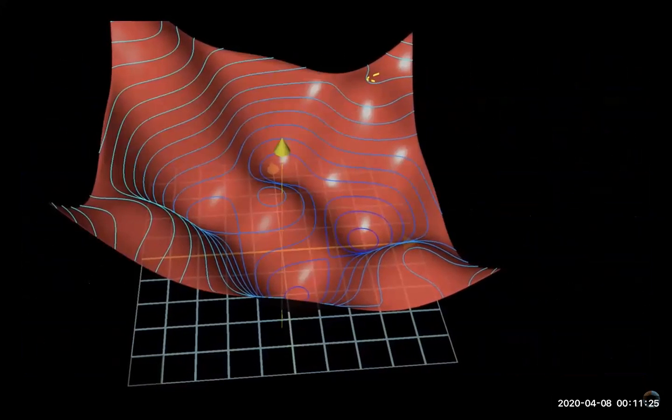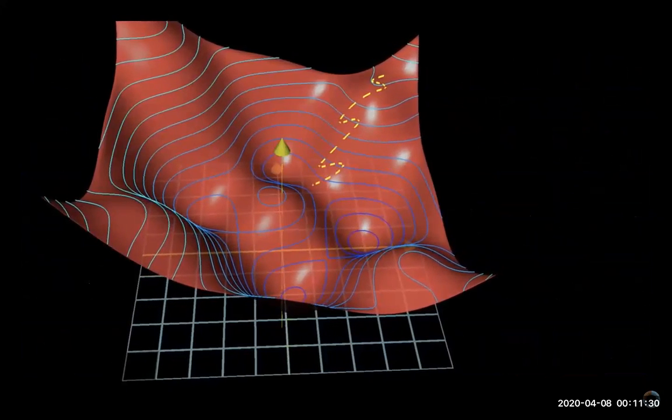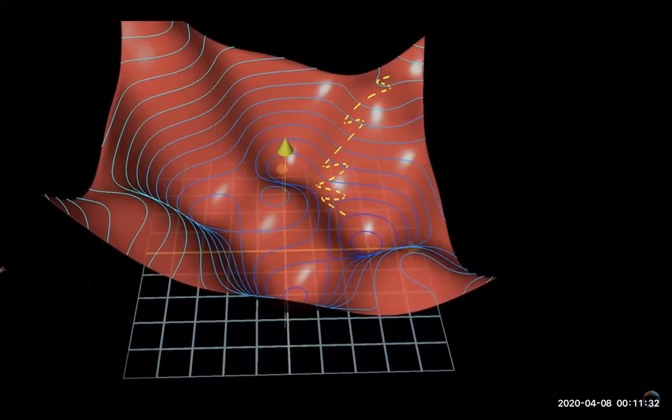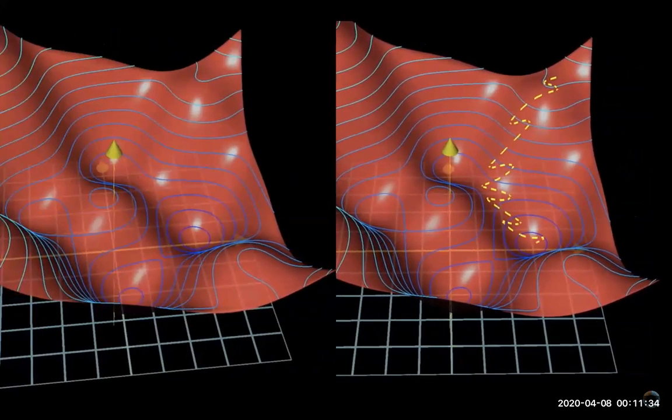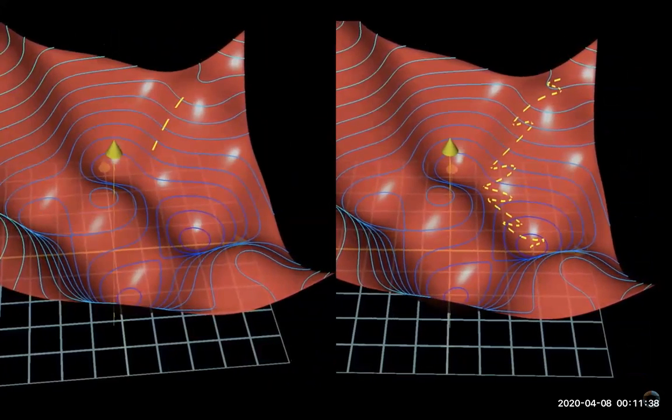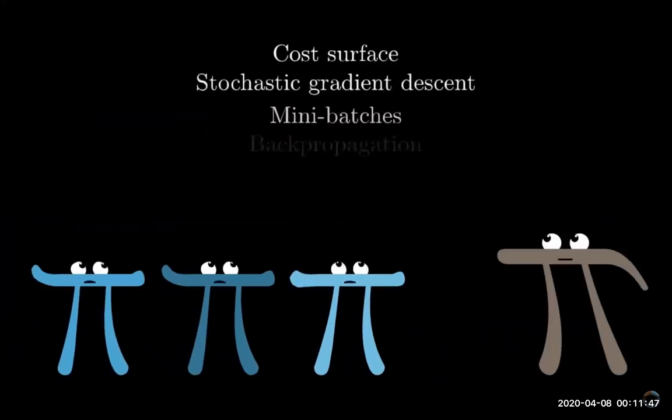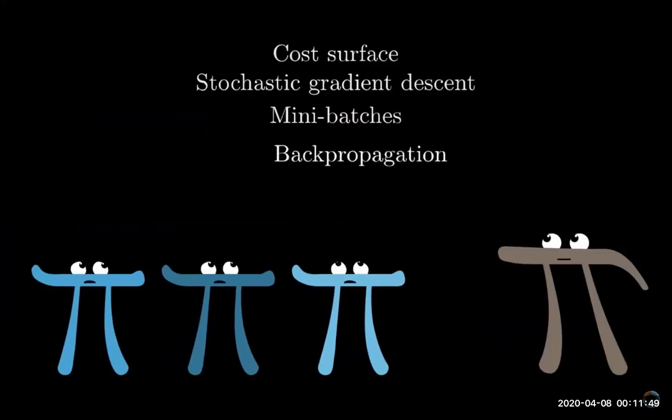More importantly, it gives you a significant computational speed up. If you were to plot the trajectory of your network under the relevant cost surface, it would be a little more like a drunk man stumbling aimlessly down a hill but taking quick steps, rather than a carefully calculating man determining the exact downhill direction of each step before taking a very slow and careful step in that direction. This technique is referred to as stochastic gradient descent.